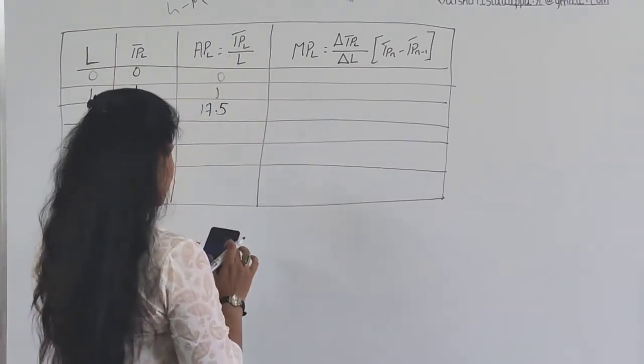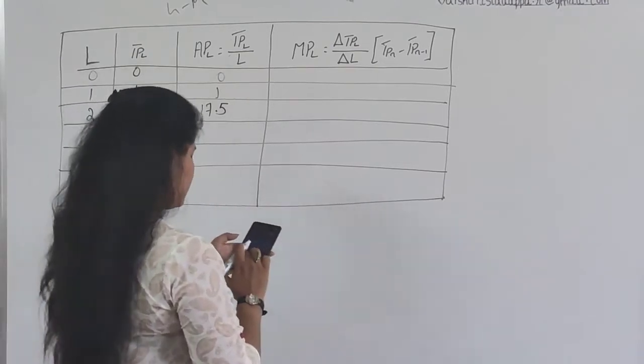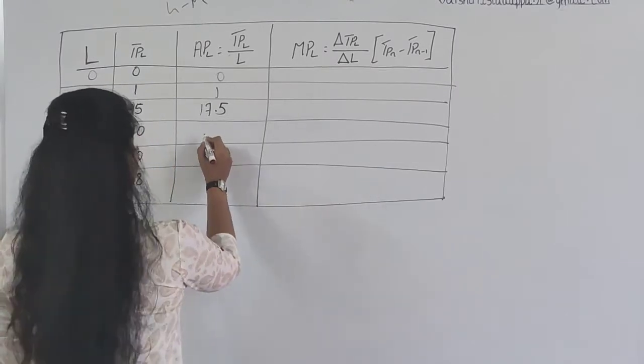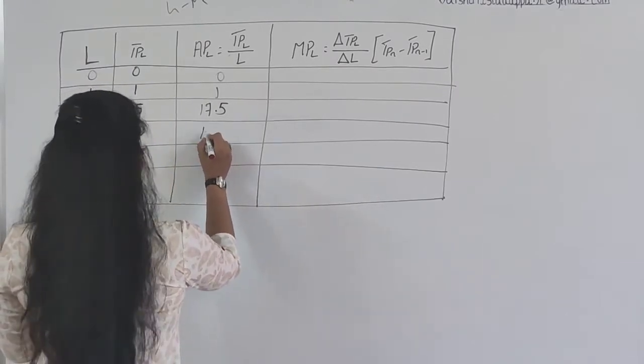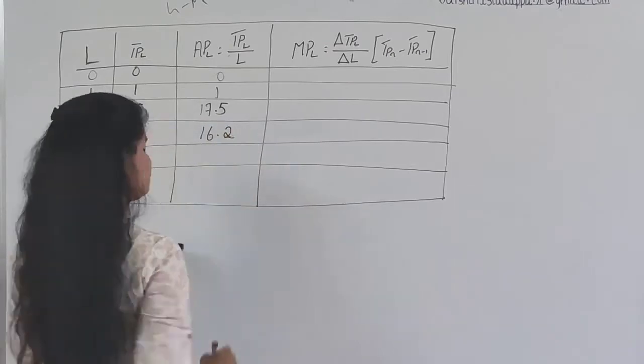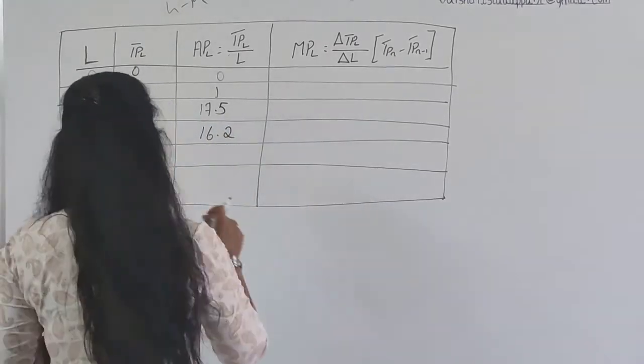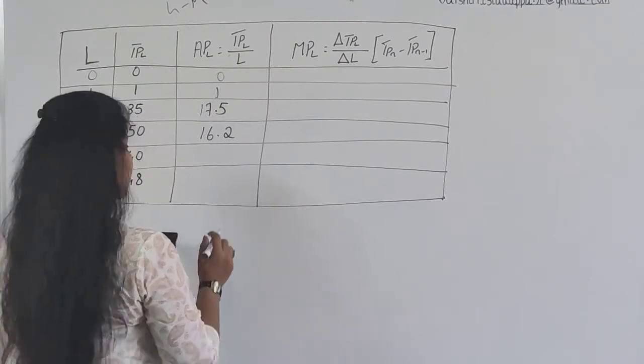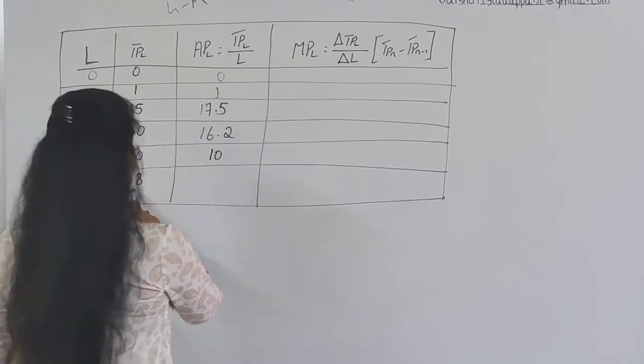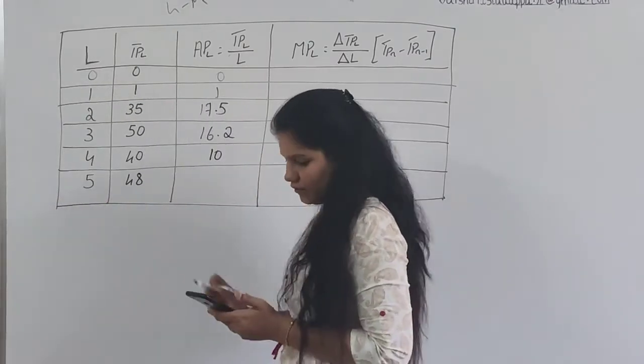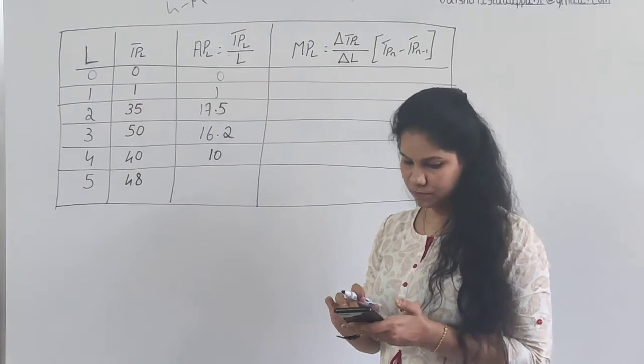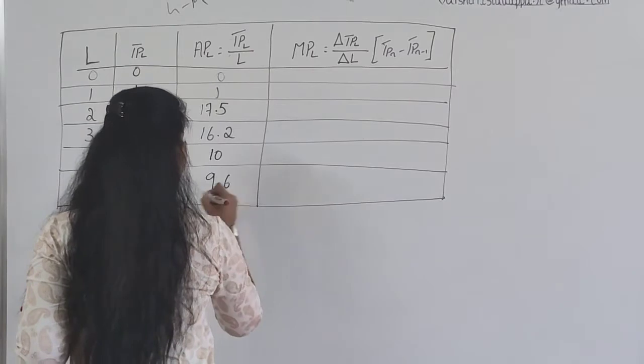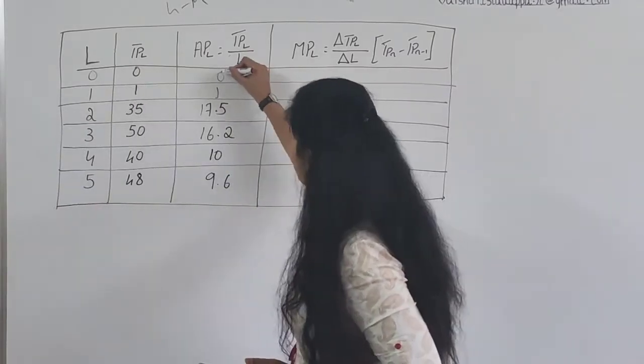Next, 50 by 3, the answer is 16.2. Then 40 by 4, which is 10. And 48 by 5, the answer is 9.6. This is the way you're going to calculate.